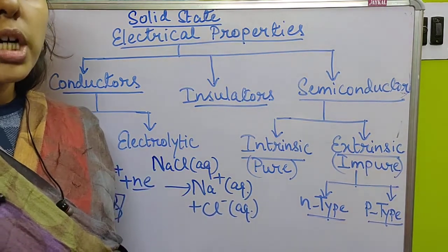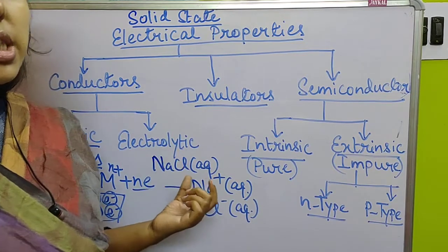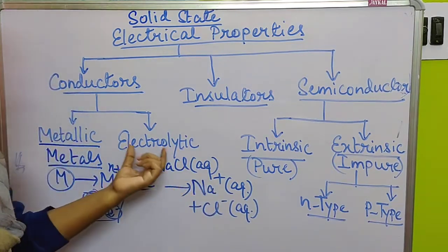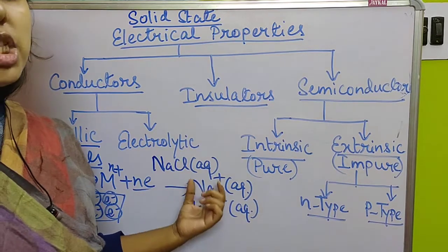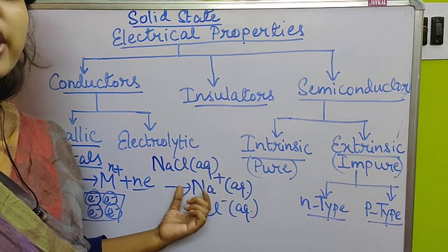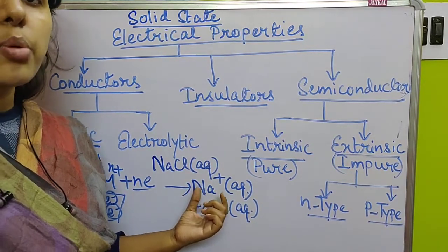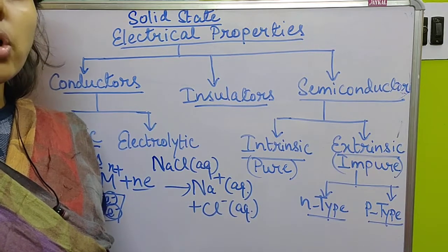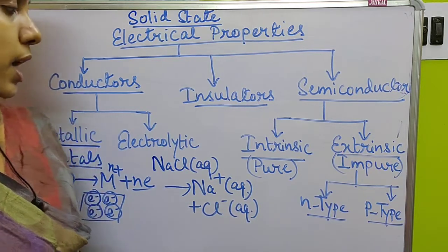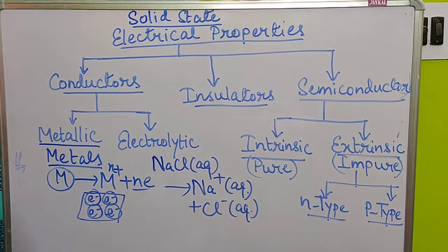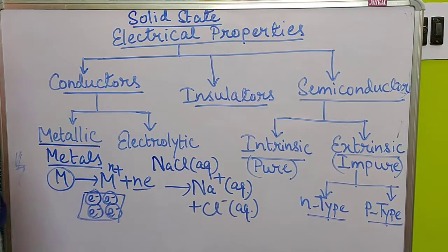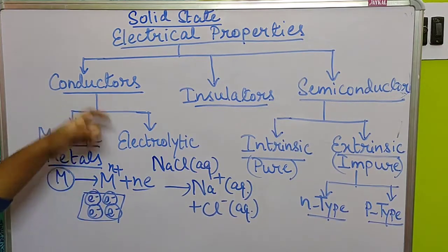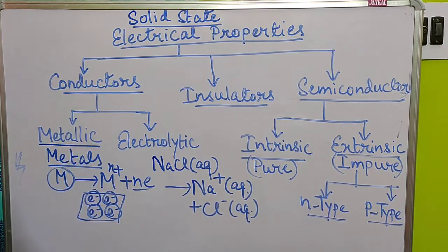Chemical dissociation takes place to conduct electric current. Dissociation means breaking of the compound — sodium chloride dissociates to make Na⁺ and Cl⁻. So this type of salts are called electrolytes, and that is why these types of conductors are called electrolytic conductors. These are the two types of conductors.